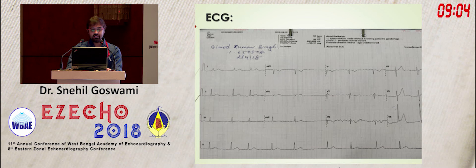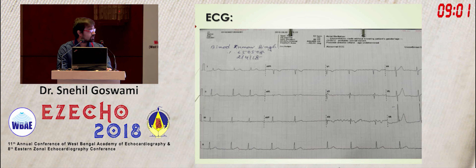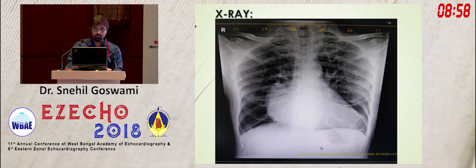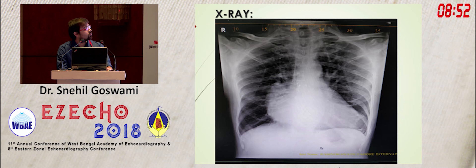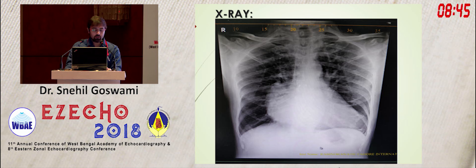The ECG showed the patient was in atrial fibrillation with a fairly controlled ventricular rate. The chest X-ray in PA view showed clear lung fields but with prominent vascular markings in the upper lobe, straightening of the left heart border, and an enlarged left atrium.